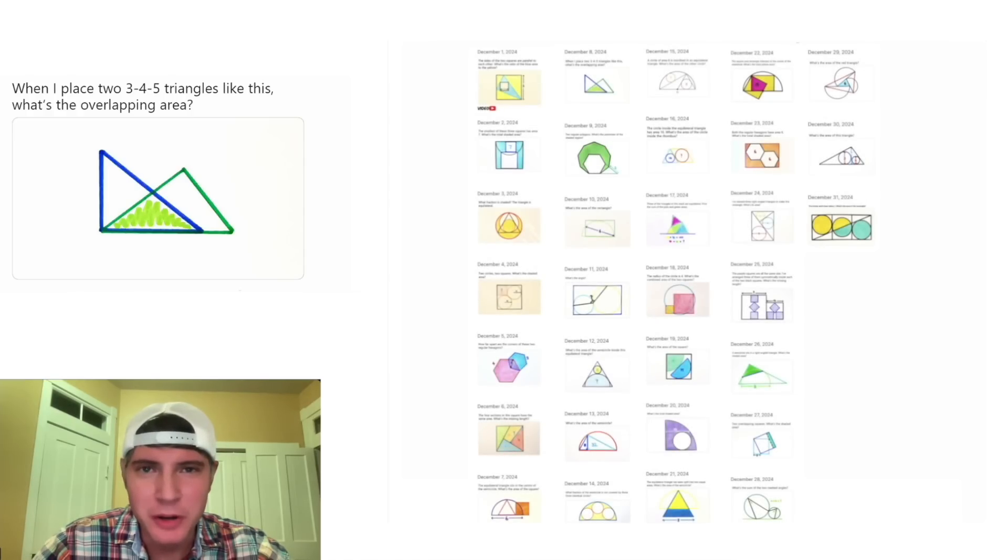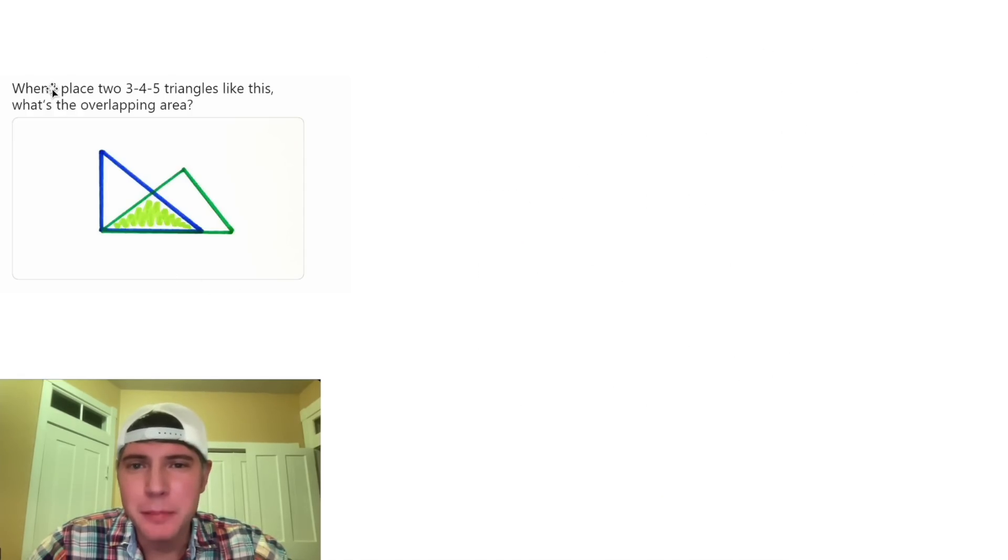For the month of December, we're going to solve 31 Katrina Ag puzzles over 31 days. This one says, when I place two, three, four, five triangles like this, what's the overlapping area?